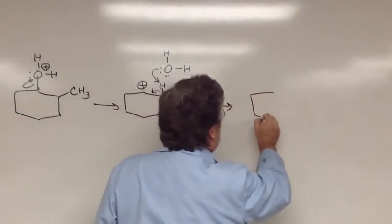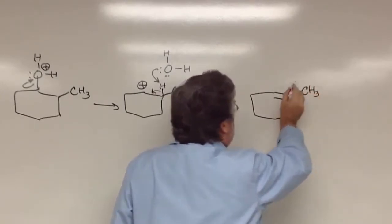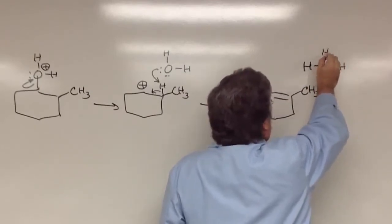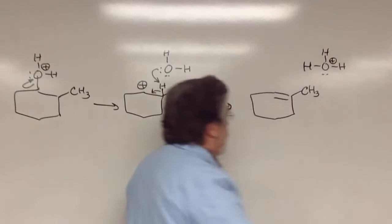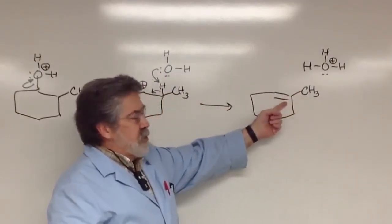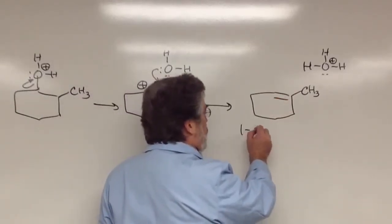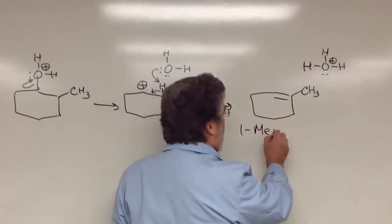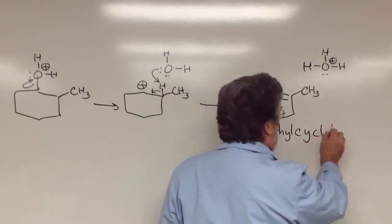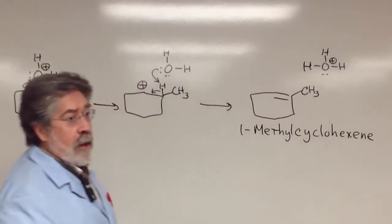And that's what puts in the double bonds. And so, the product of that step is this alkene, and of course, H3O+. All right. Now, when you look at this alkene, the methyl is attached to one of the carbons where the double bond starts. And so, we would call this compound in IUPAC nomenclature, 1-methylcyclohexene. Good so far, I trust.